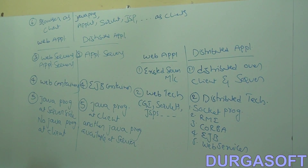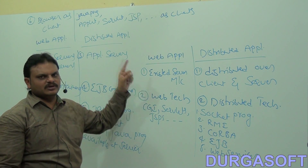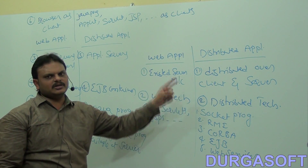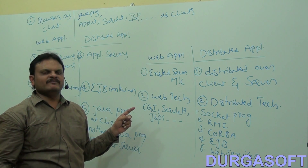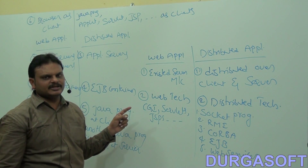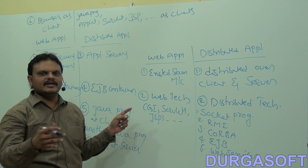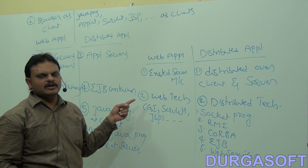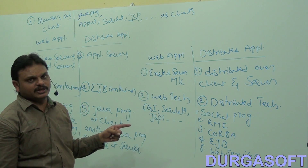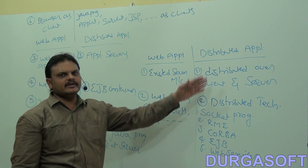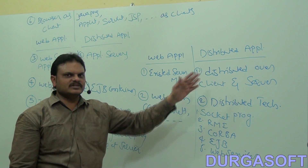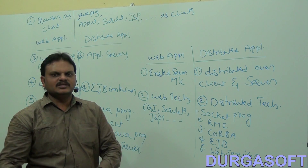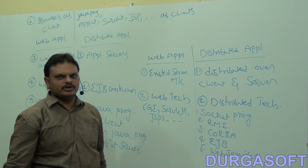To recap the differences: web application is a server-side application available only at the server machine; a distributed application is distributed over client and server machines. Fundamentally, a web application is one type of distributed application because it uses client-server architecture. But in a distributed application, application logic is split between client and server — client sends a request, server executes and generates a response.